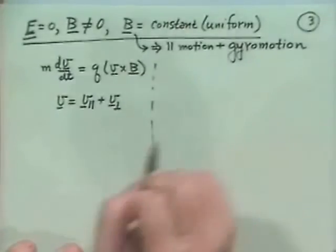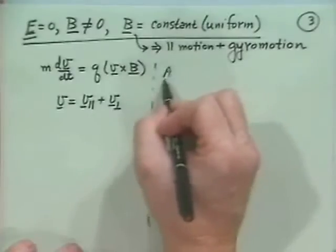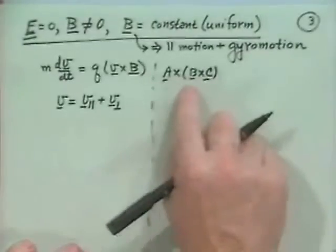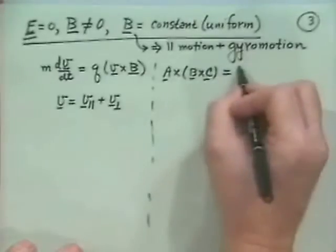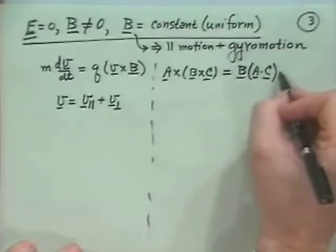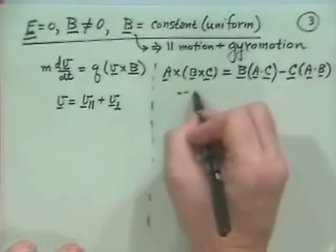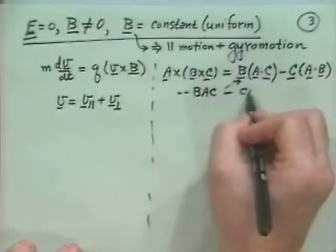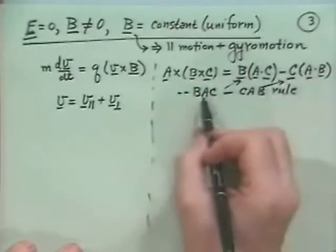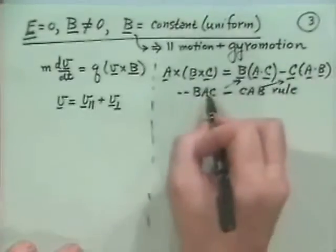To define parallel and perpendicular, we use what's called the back-cab rule. If I have A cross (B cross C), the back-cab rule says this equals B(A·C) minus C(A·B). All you have to remember is that the first letter represents the vectorial direction and the other two represent the dot product part.